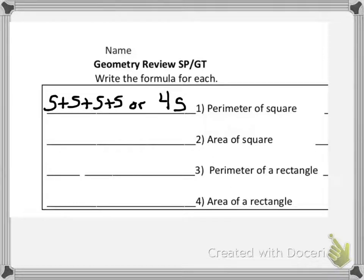For number 2, to find the area of a square we would multiply the side length times the side length — s times s — or that's the same thing as side squared.